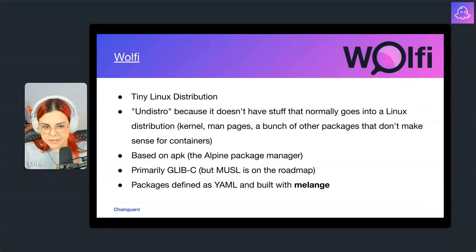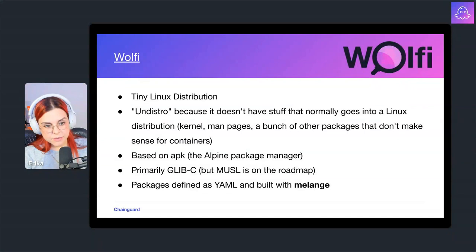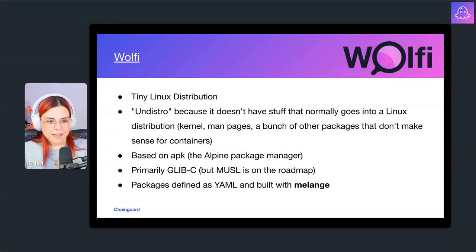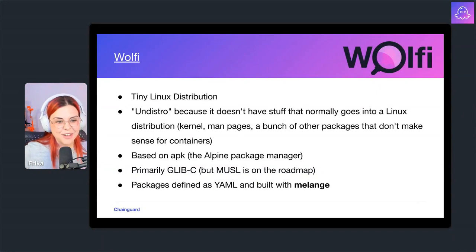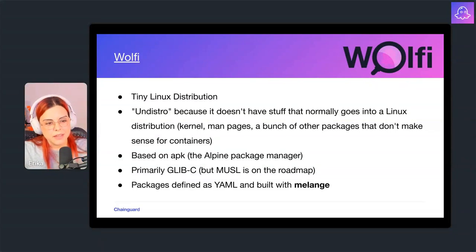One of the differences people ask about between Wolfi and Alpine is that Wolfi is primarily based on glibc while Alpine uses musl, but it's on the roadmap to also have a musl version for Wolfi. Another thing I love most is that all the packages are defined in YAML files and built with Melange. The Wolfi OS repository has all the packages there — you can see how they are built and it's very transparent.